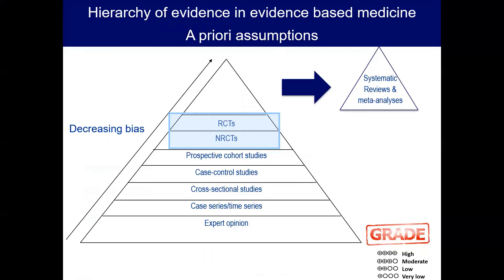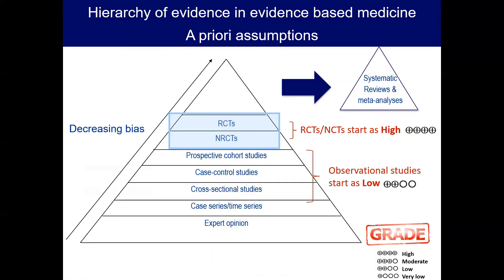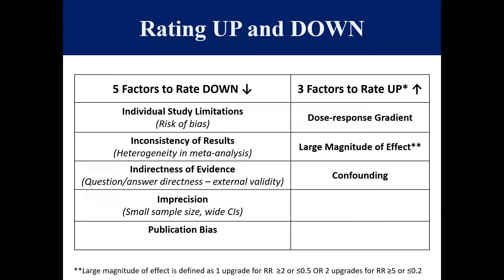The level you start at depends on the type of studies included in the SRMA. If the SRMA includes randomized controlled trials, it starts with a GRADE of high since they have the least bias, whereas a SRMA including observational studies starts with a GRADE of low since these studies have greater bias. From that starting point, you then assess various factors to rate up or down.